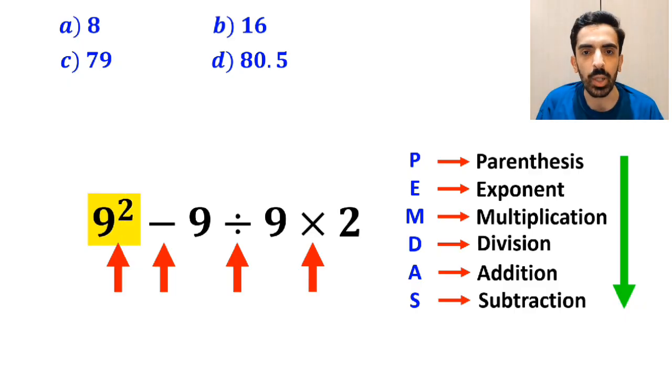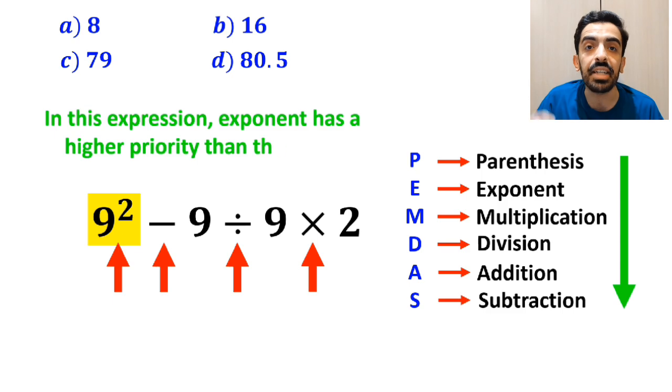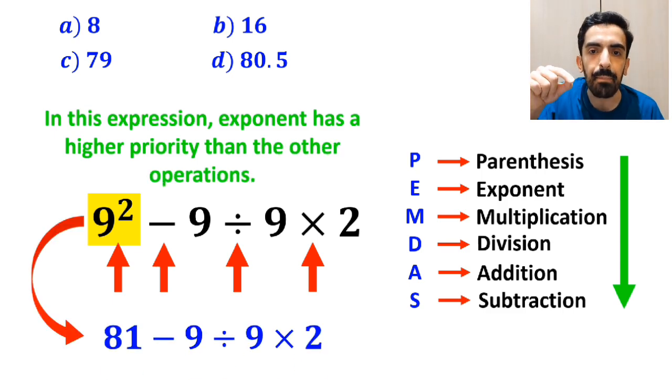We should start with the exponent, because in this expression, exponent has a higher priority than the other operations. So, this expression simplifies to 81 minus 9 divided by 9 times 2.